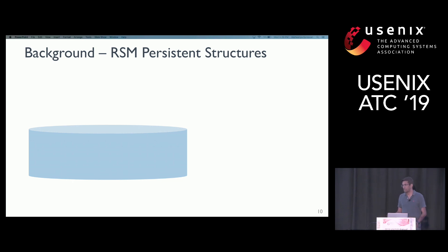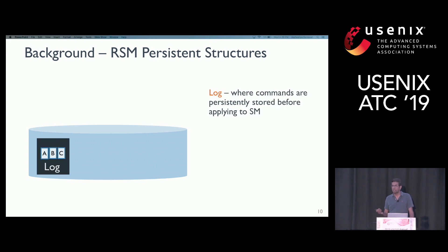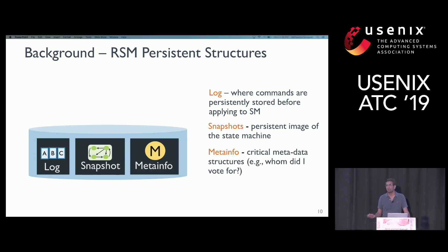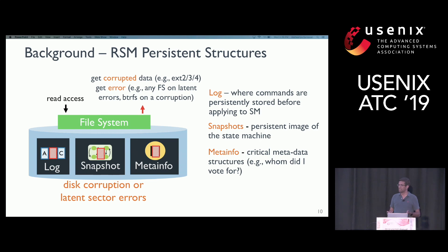Because we are interested in storage corruptions, we need to understand the different persistent structures RSM systems maintain. First, incoming client commands are stored in a data structure called the log — a contiguous, ever-growing structure present on every node. Periodically, you take a snapshot of the in-memory state machine and garbage collect the log to prevent disk exhaustion. In addition, there is something called meta info, which contains vital information such as voting records. All of these critical data structures could be affected by storage faults, resulting in corruptions or access errors depending on the file system in use.